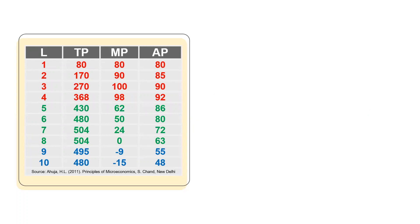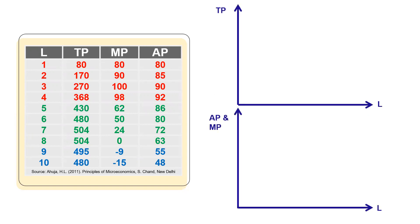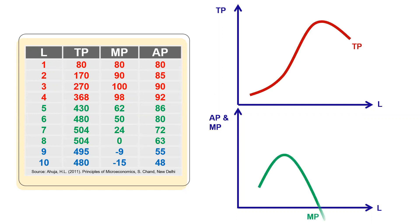Here we have labor units (L), total production (TP), marginal production (MP), and average production (AP). On the horizontal axis we have labor units, and on the vertical axis we have total production, marginal production, and average production. This is the total production curve, here we have the marginal production curve, and the blue line shows the average production curve.